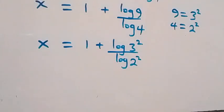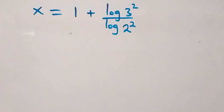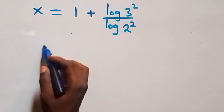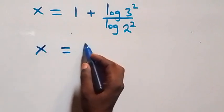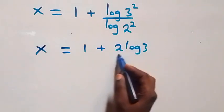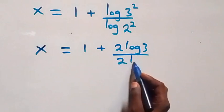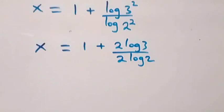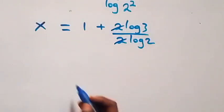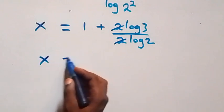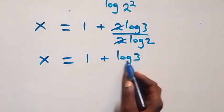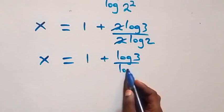From here we apply the power law of logarithms again. The 2 in the exponent comes down in the numerator and also in the denominator. We have x equals 1 plus 2 log 3, over 2 log 2. From here, 2 cancels each other and we have x equals 1 plus log 3 over log 2.